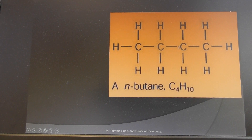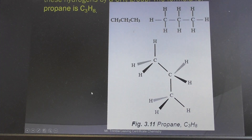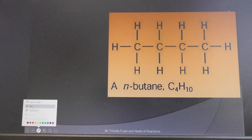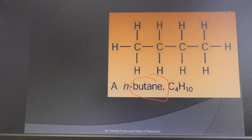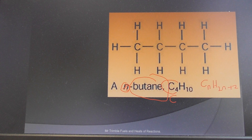With two carbons it's ethane, three carbons is propane, four carbons is butane. Butane has the formula C₄H₁₀ — it's an alkane, which means it follows the general formula CₙH₂ₙ₊₂. That means for every n carbons there will be two times that number plus two hydrogens.